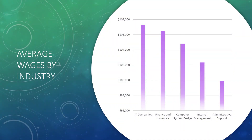In May 2020, the median annual wages for information security analysts in the top industries in which they worked were as follows: Information, $107,310; Finance and Insurance, $106,430; Computer Systems Design and Related Services, $104,820; Management of Companies and Enterprises, $102,330; and Administrative and Support Services, $99,860.